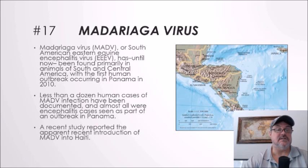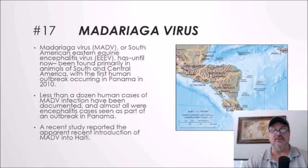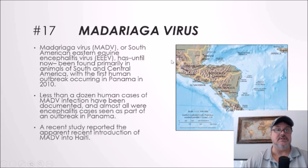Number seventeen: Madariaga virus. Madariaga virus, or South American eastern equine encephalitis virus, has until now been found primarily in animals of South and Central America, with the first human outbreak occurring in Panama in 2010. Less than a dozen human cases have been documented, almost all encephalitis cases seen as part of that outbreak. A recent study reported the apparent recent introduction of Madariaga virus into Haiti, suggesting we may see more emerging pathogens in the future.